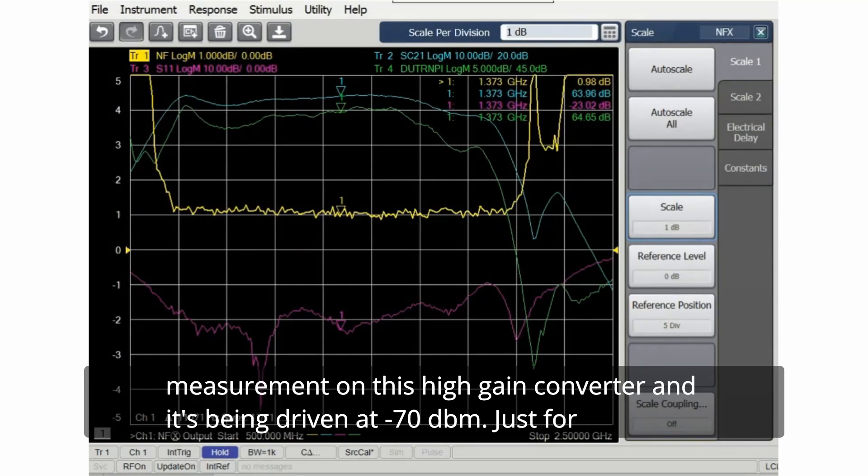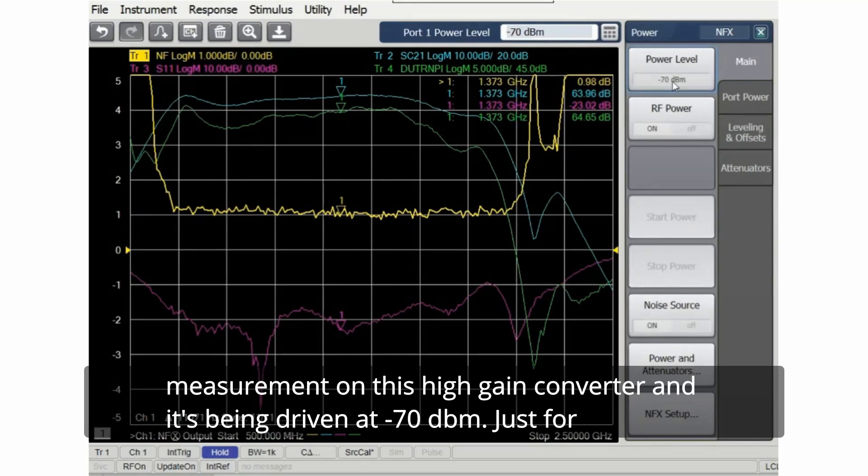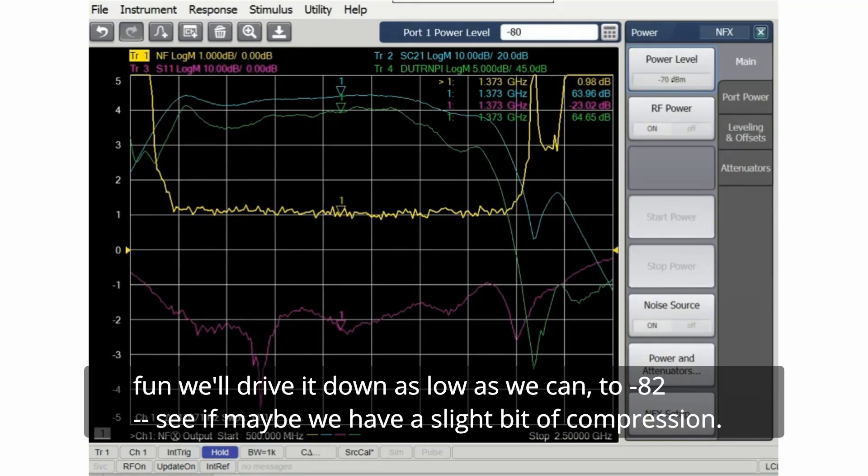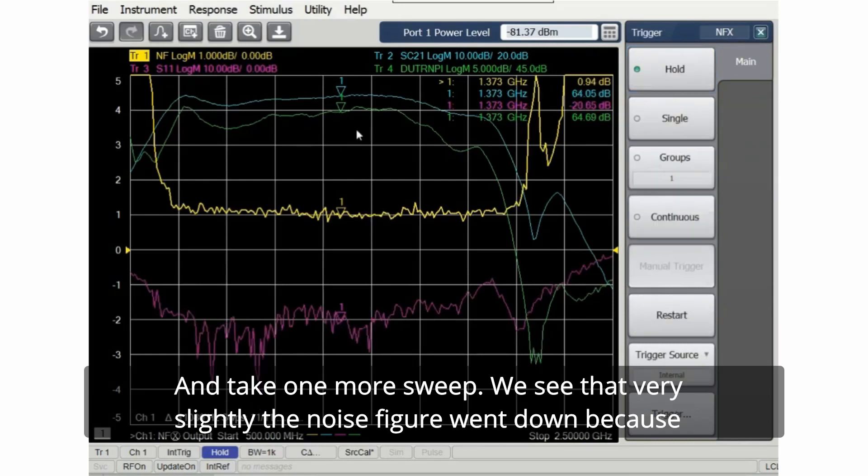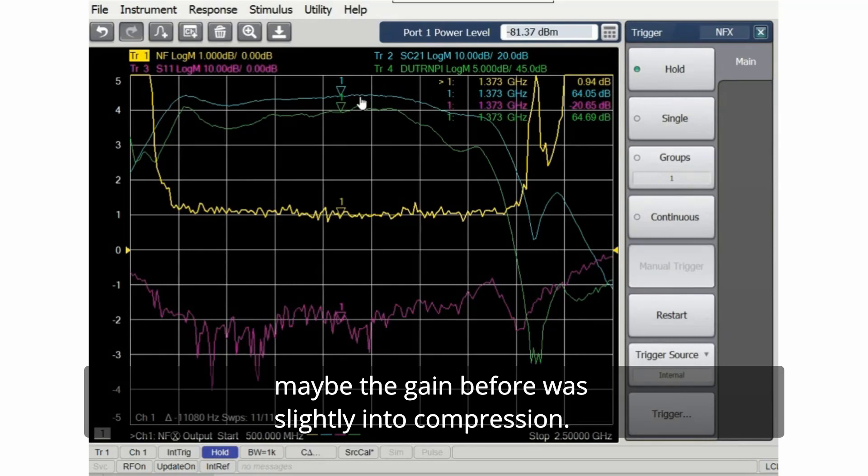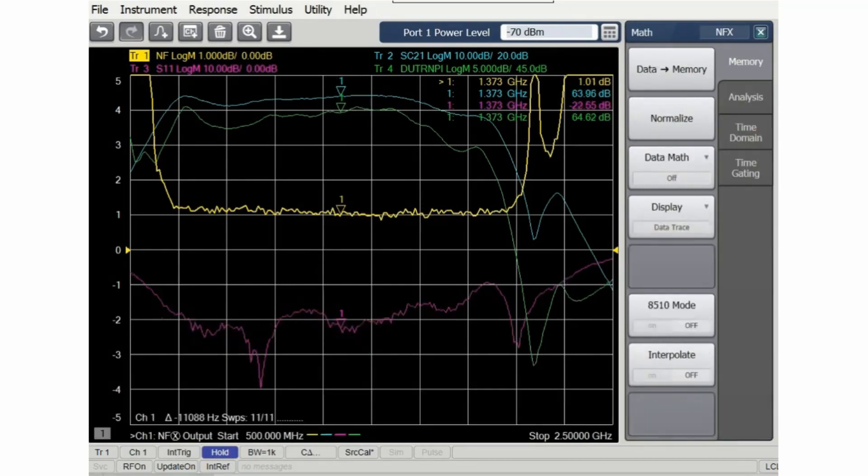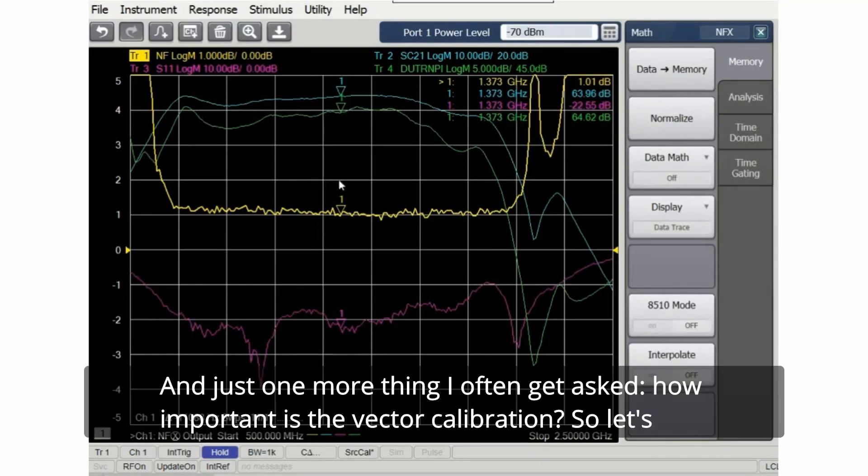Just for fun, we'll drive it down as low as we can to minus 82, see if maybe we have a slight bit of compression, and take one more sweep. We see that very slightly the noise figure went down because maybe the gain before was slightly into compression.